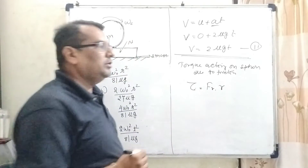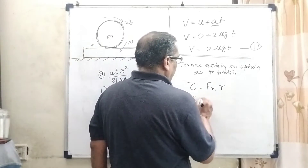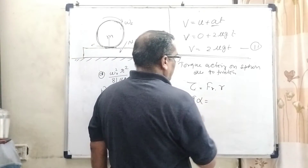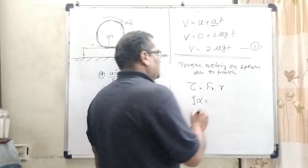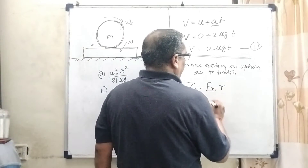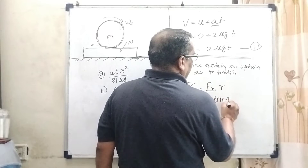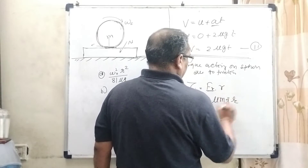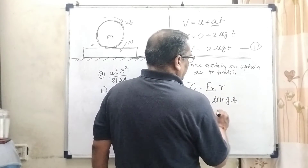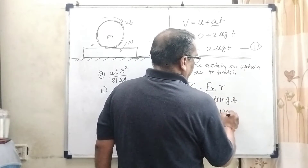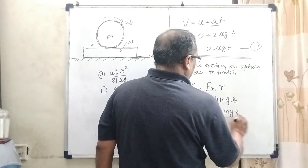Using tau equals I into alpha, we get: f times r equals mu mg times r equals I times alpha. So alpha equals mu mg r upon I. The moment of inertia of the sphere I equals 2/5 mr squared.